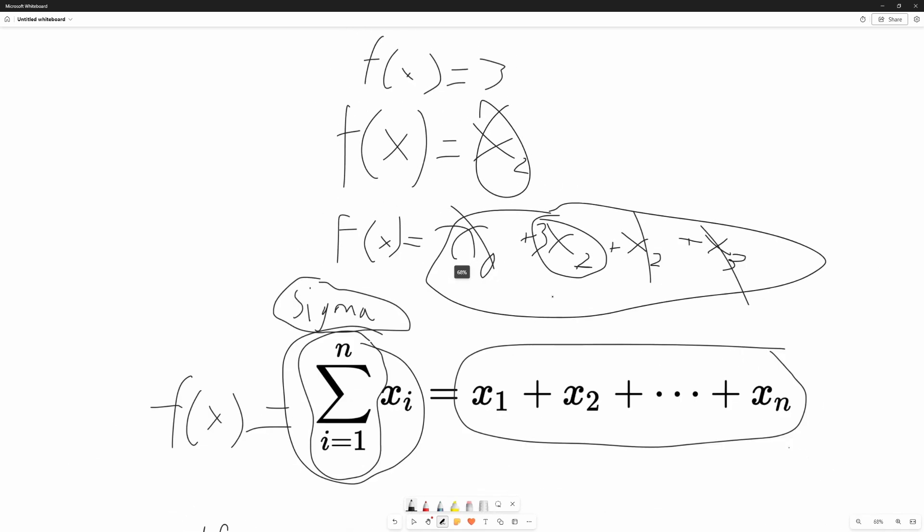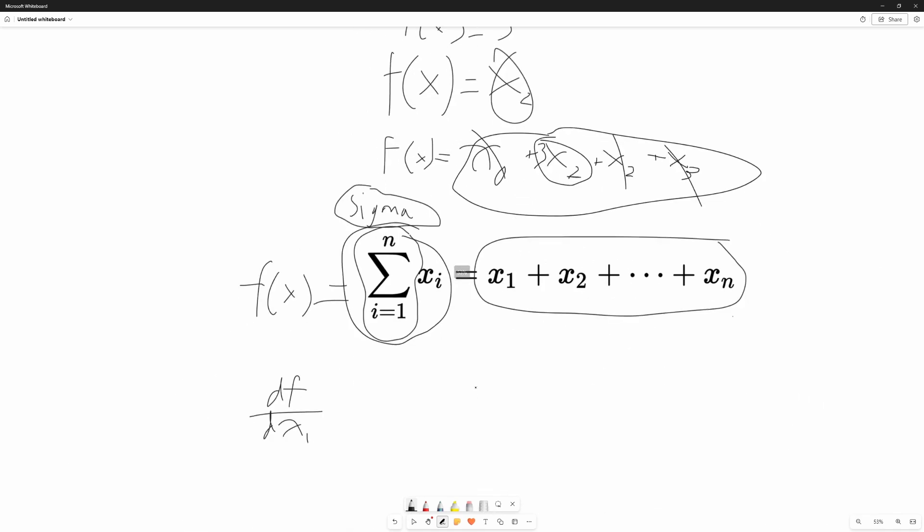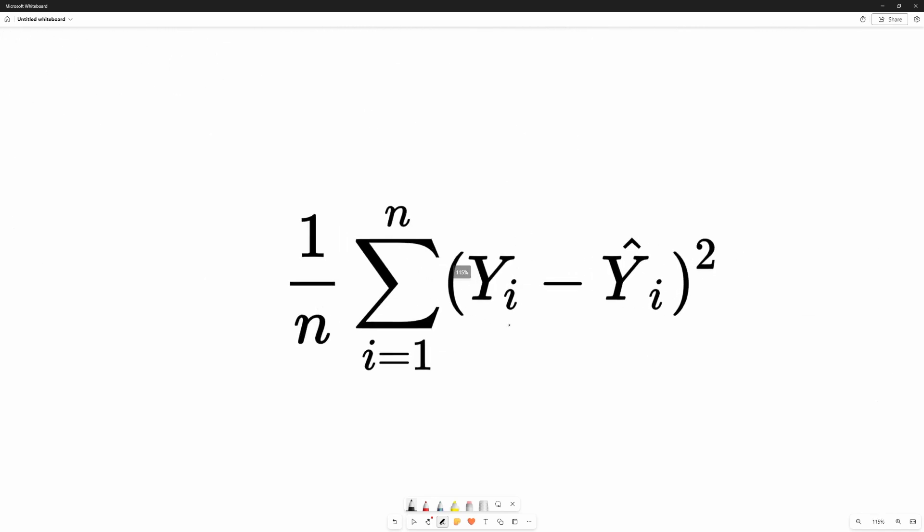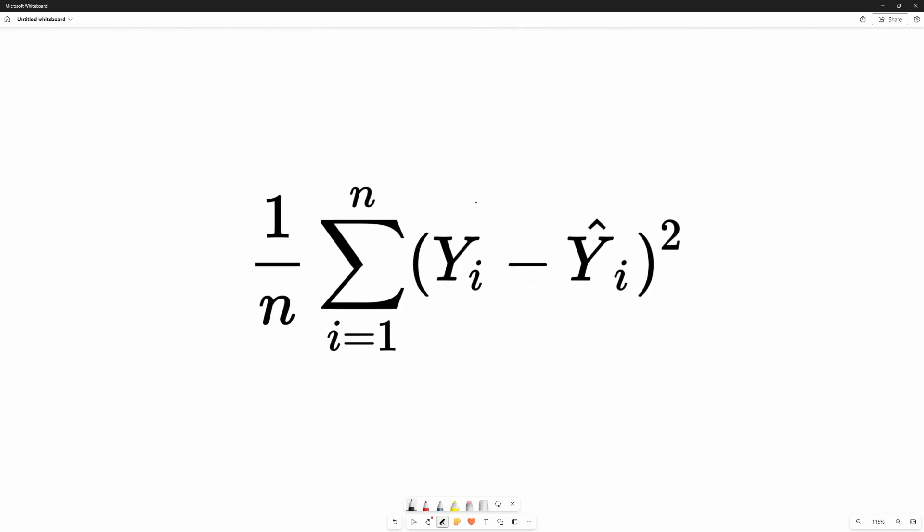So that's how you find the derivative of the sigma function. Now let's do a little practice here. So right here, I have the mean squared error function. This is a function you see on statistics. It's also used in AI as a loss function or whatever.